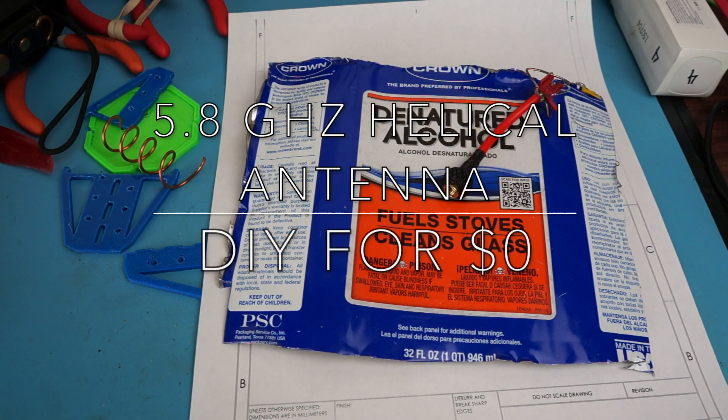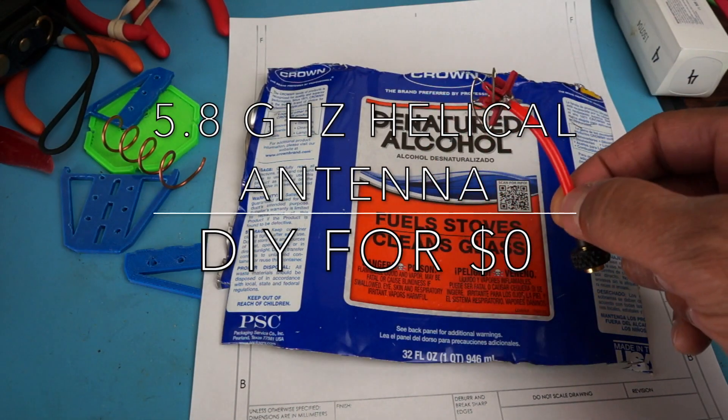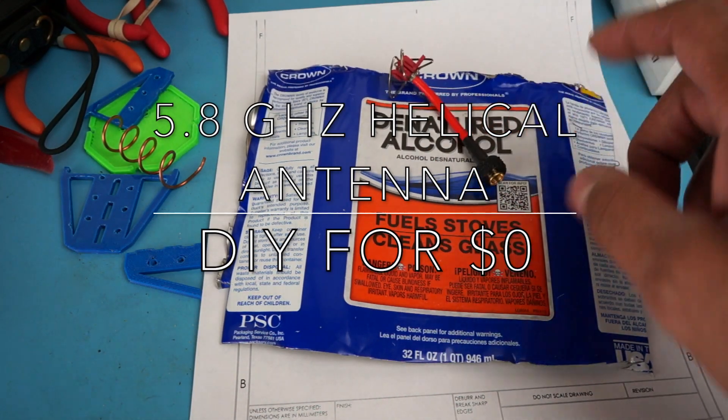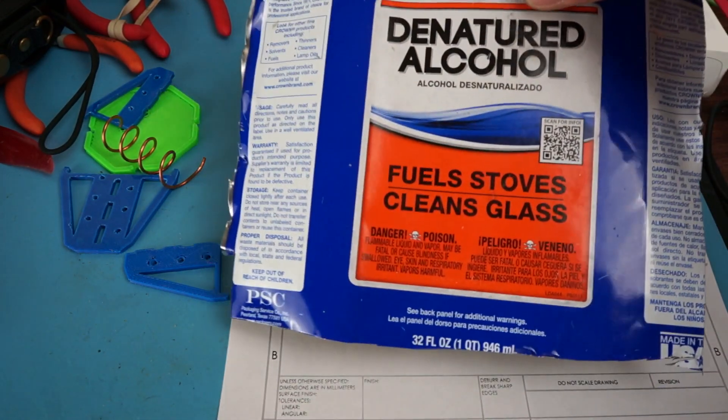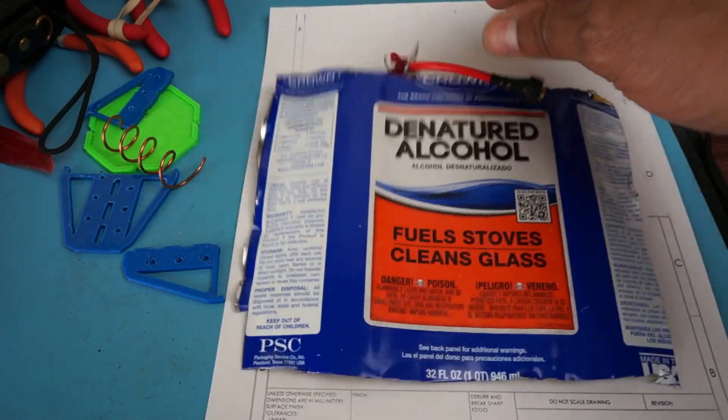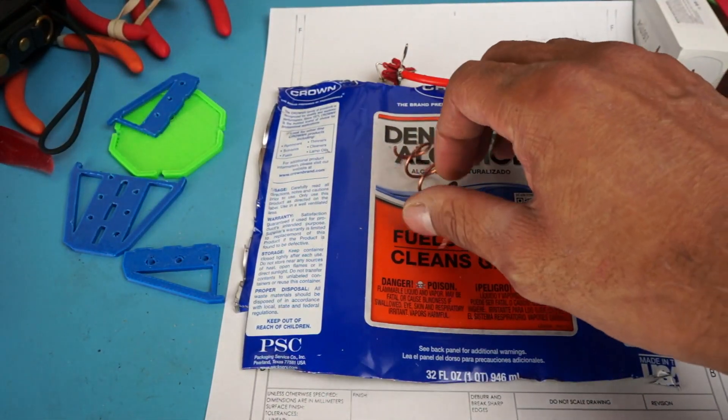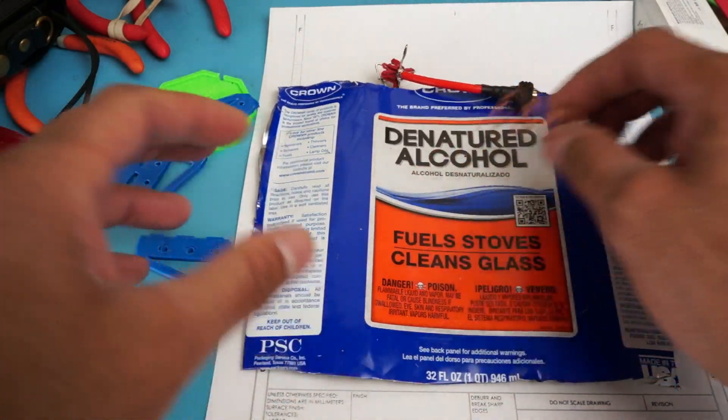You're probably wondering what this pile of junk is in front of you right now. Broken antenna, piece of a denatured alcohol can, coil of wire, 3D printed parts.